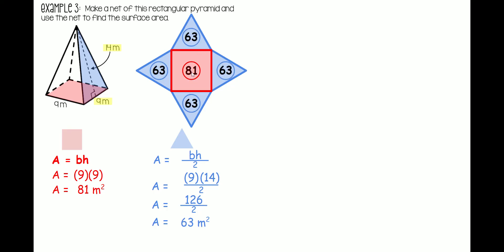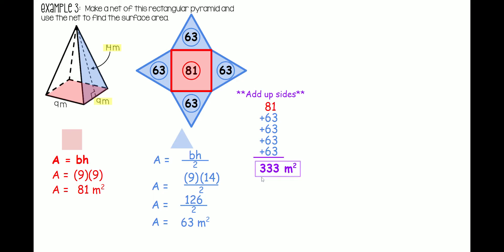Now we know the surface area of the base and all four sides, so we just add them up: 81 plus 63 plus 63 plus 63 plus 63. Add it all up and you should get 333 meters squared. That's our final answer.